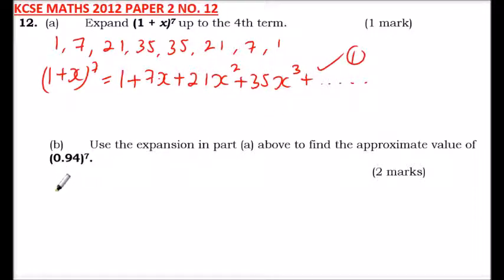From there we go to part b: use the expansion in part a above to find the approximate value of 0.94^7. Now we will need to rewrite 0.94^7 in another way so that we will be able to use the part a expansion. This can be written as (1-0.06)^7, that will still give you 0.94, raised to power 7.